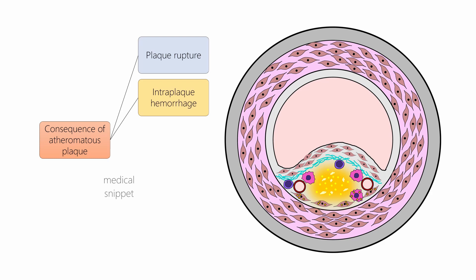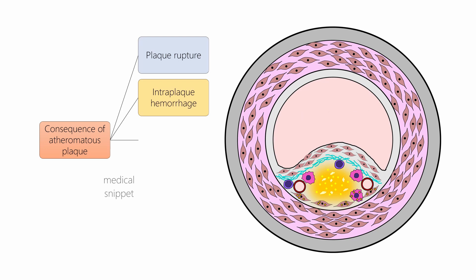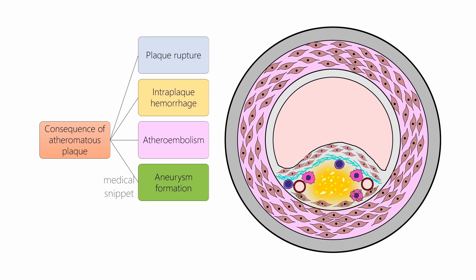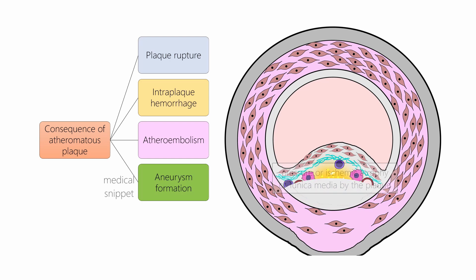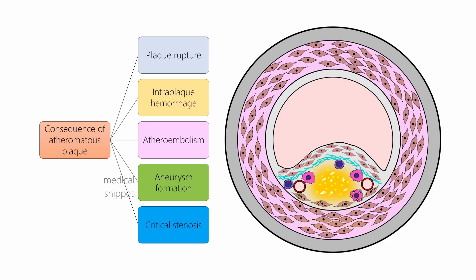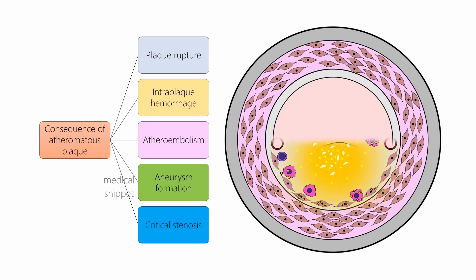The second consequence of atheromatous plaque is intraplaque hemorrhage due to leaky neovascularization, as discussed earlier. A contained hematoma may expand the plaque or induce plaque rupture. Third is atheroembolism due to plaque rupture, causing microemboli. Fourth is aneurysm formation, caused by pressure or ischemic atrophy of tunica media by the intimal plaque. Fifth is the progressive growth of atheromatous plaque causing critical stenosis of the artery.